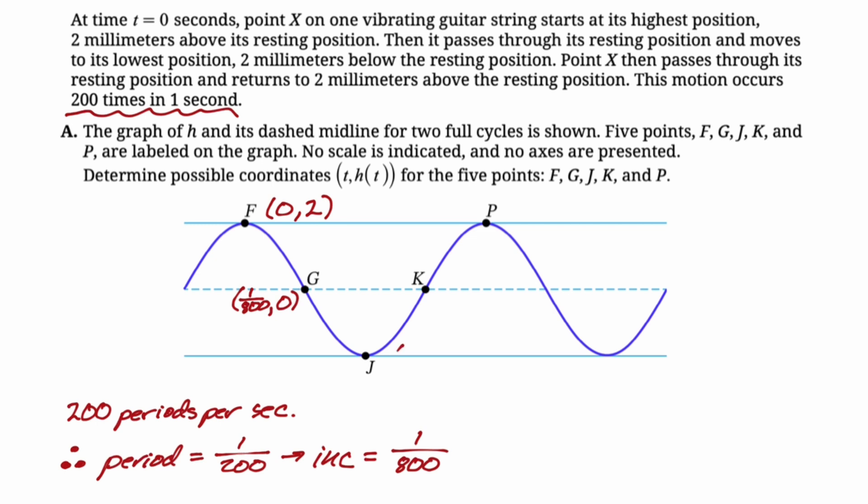Then we're going to move one increment over, which is two over 800, but I'm going to simplify that to one over 400, and we're at the bottom. So negative two. Then we go another one over 800, which takes us to three over 800, and we're back at resting. Then we go another one over 800, which is four over 800, which is one over 200, the period, which is good, and we're back at two. So I think those are five good points.